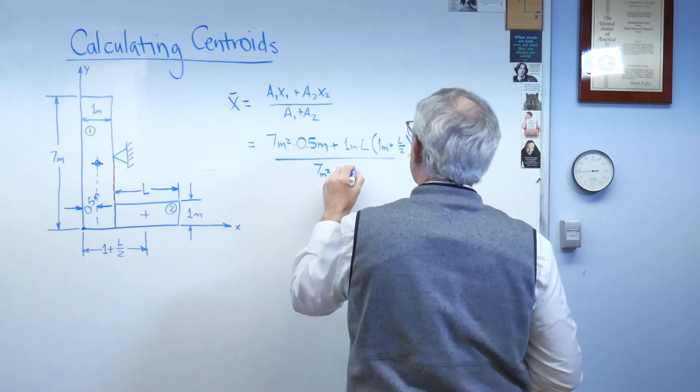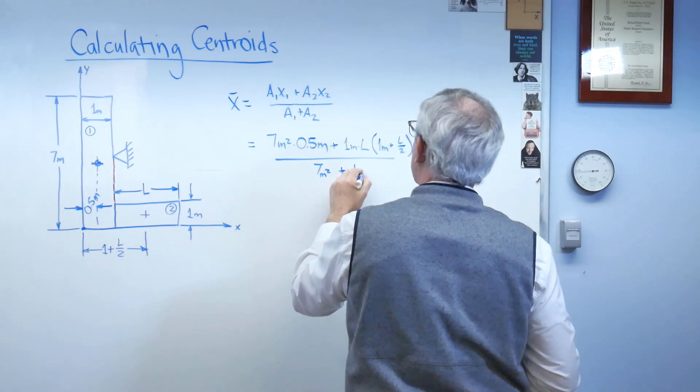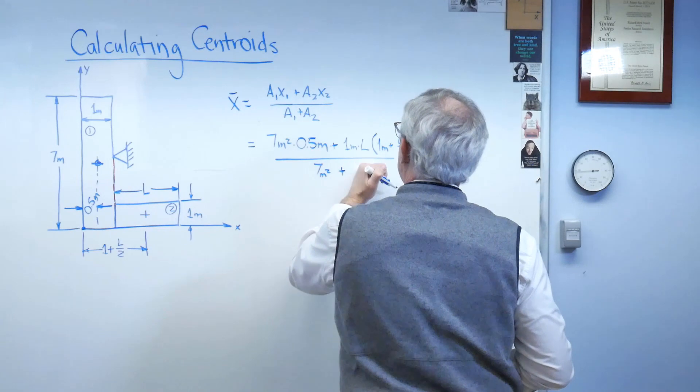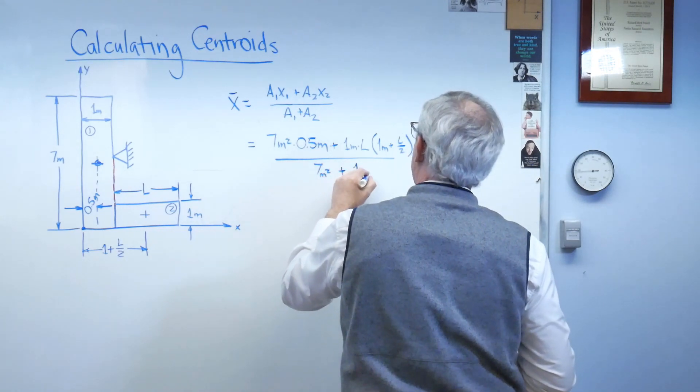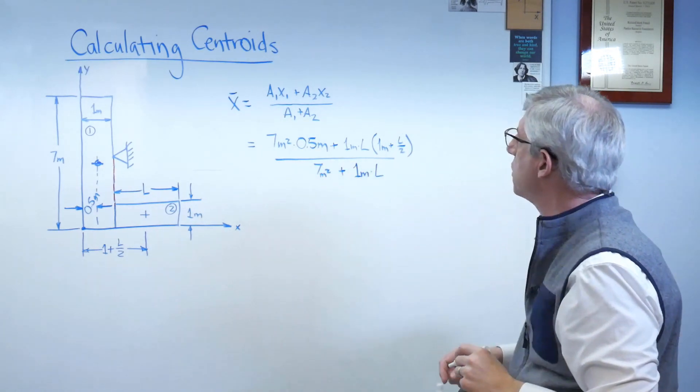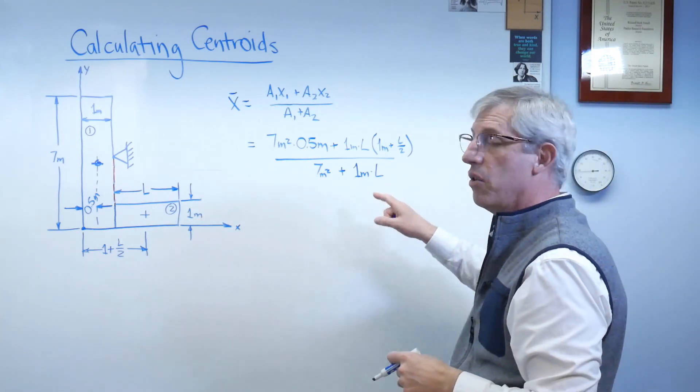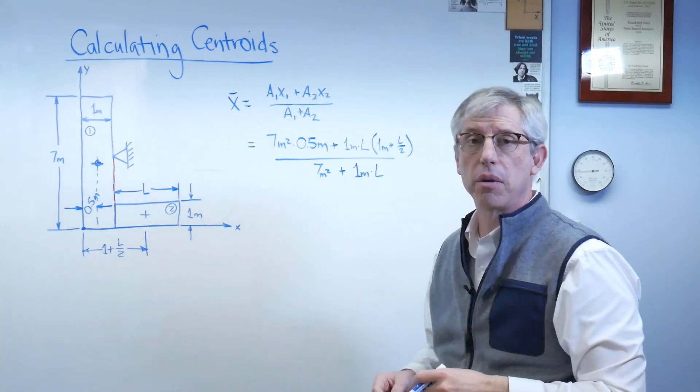And a2 is l, well, 1 times, 1 meter times l. Now, the reason I'm not putting units on l is that that'll drop out automatically here.